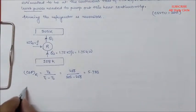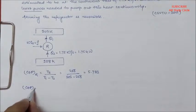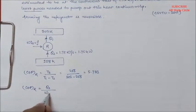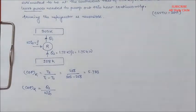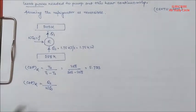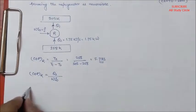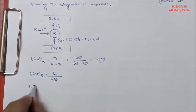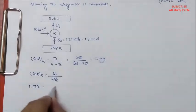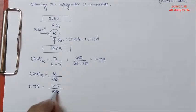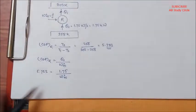Now, we have the formula for COP as Q2 by work input. We got to know the COP. So, we can put 5.733 is equal to Q2, we know as 1.75, and W input we have to calculate.